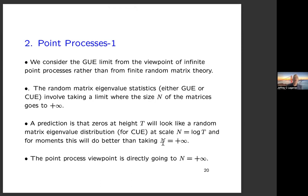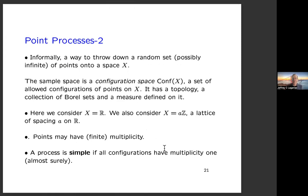On to point processes. The GUE and CUE have been studied in great detail with finite matrix models, but in this talk we look at the GUE limit from the viewpoint of infinite point processes rather than finite random matrix theory. The random matrix eigenvalue statistics involve taking a limit where the matrix size goes to infinity, but here we go directly to N = +∞. We look at infinite point processes on the line with average spacing one.